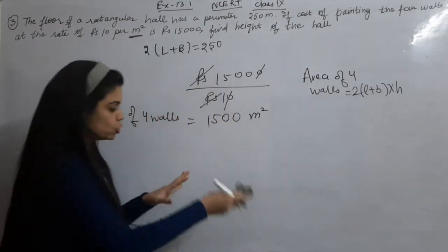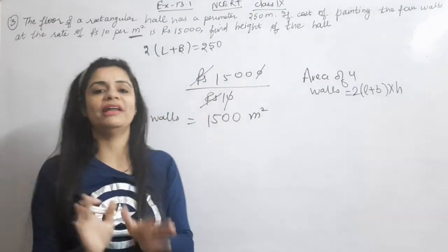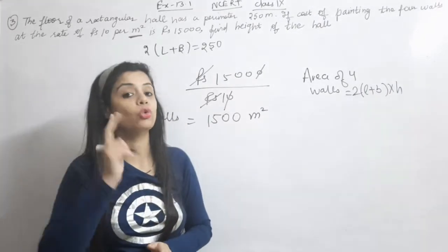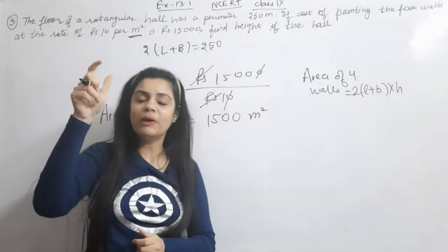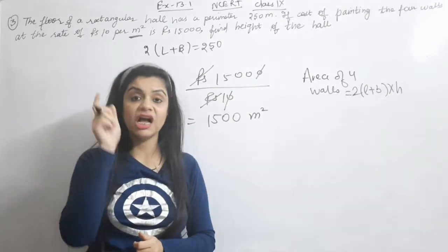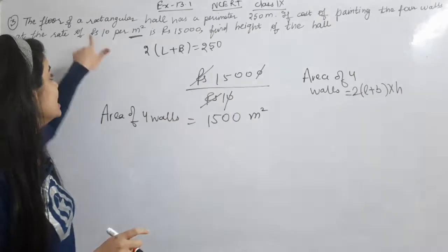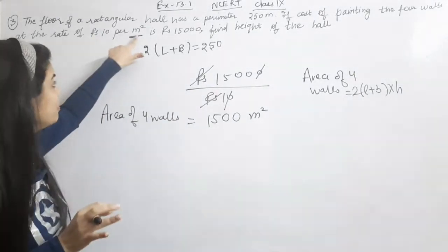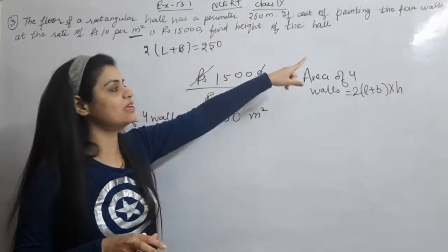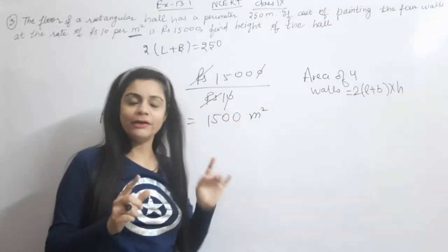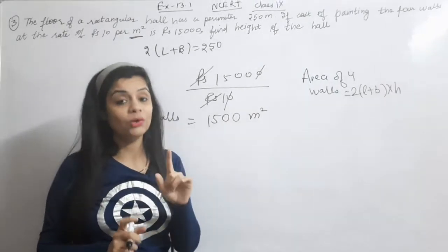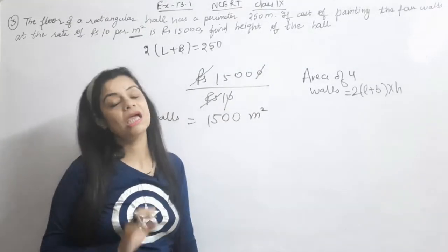For students who find this difficult, I directly tell them: in any sentence in this mensuration chapter where there are two costs, keep one cost above and one below and divide. Rupees will cancel with rupees. You need to look for the unit — search for the meter square area in that sentence. That remaining unit will be your area answer. If you want to understand the logic, understand it; otherwise this shortcut works fine.